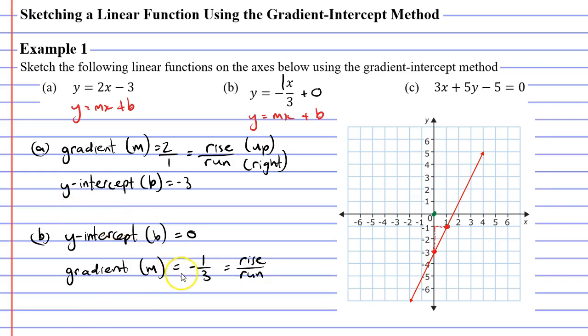Now what do we do in a situation where we have a negative? Well that negative needs to go in front of one of the numbers. Either the 1 or the 3. It really doesn't matter which one you pick. So I'm going to take that negative and I'm going to put it in front of the 1. That means that our rise will be a downward movement this time because we have a negative. Our run is positive so this will be a movement to the right.